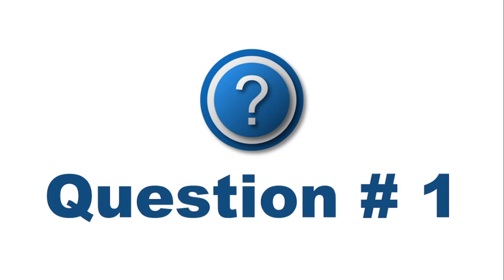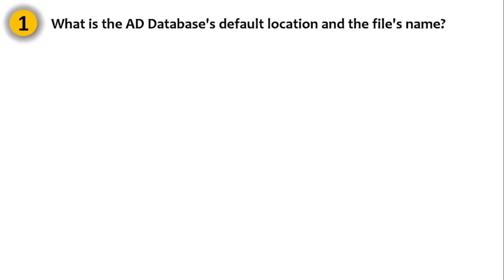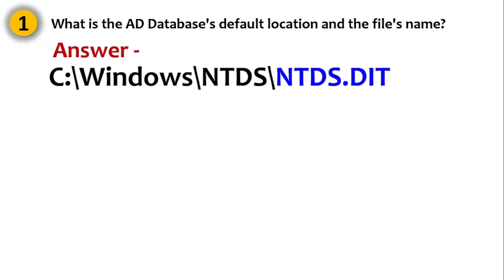Question number one — this is a prominently asked question in most interviews: What is the Active Directory database location and the file name? The answer is: the location is C:\Windows\NTDS, and the name of the file is ntds.dit.